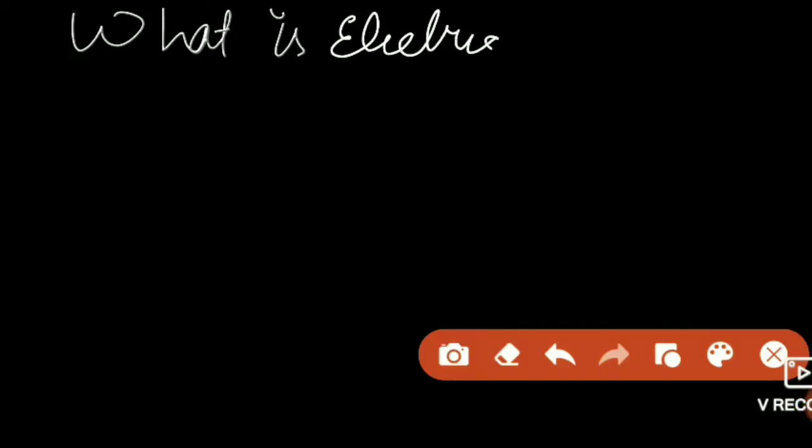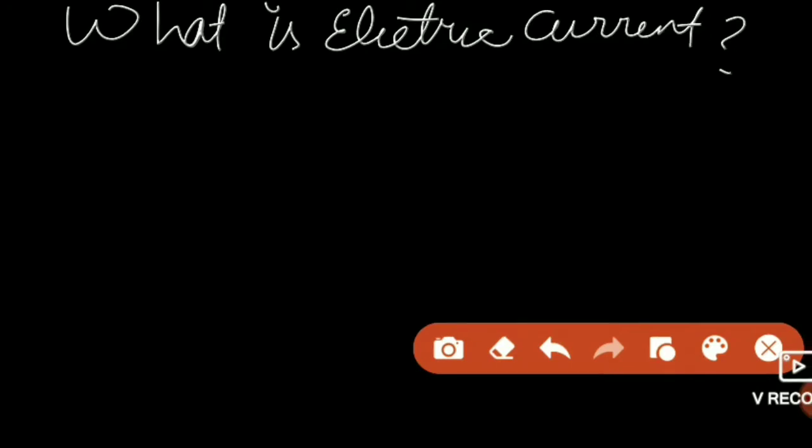First term is current. Let's see what is electric current. It's a very simple concept. Basically there's an atom in which electrons are revolving in its orbit or shells.